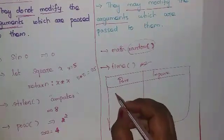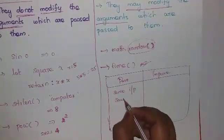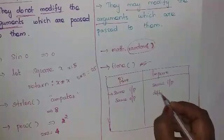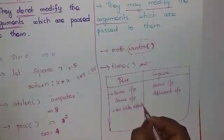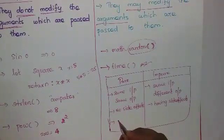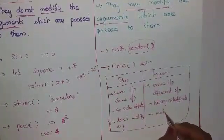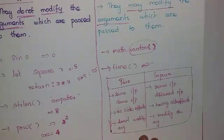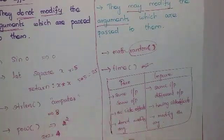To summarize: in a pure function, same input gives the same output, there are no side effects, and arguments are not modified. In an impure function, same input gives different output, it has side effects, and it may modify the arguments. This is the difference between pure and impure functions.